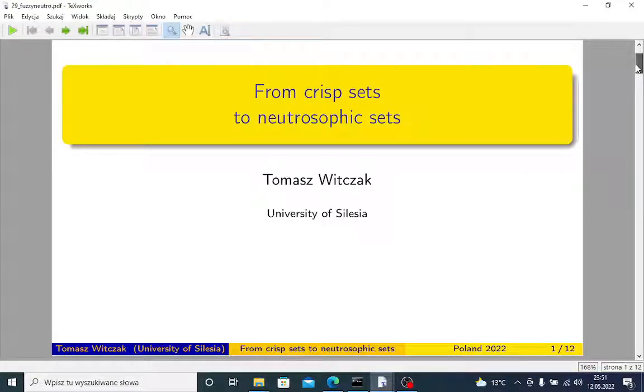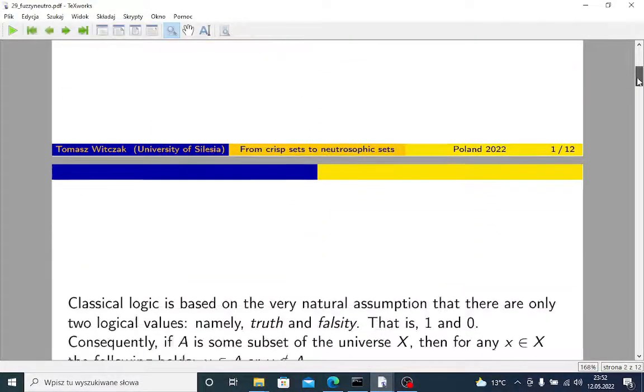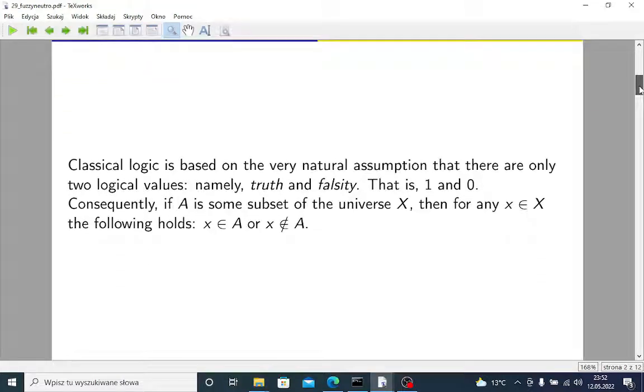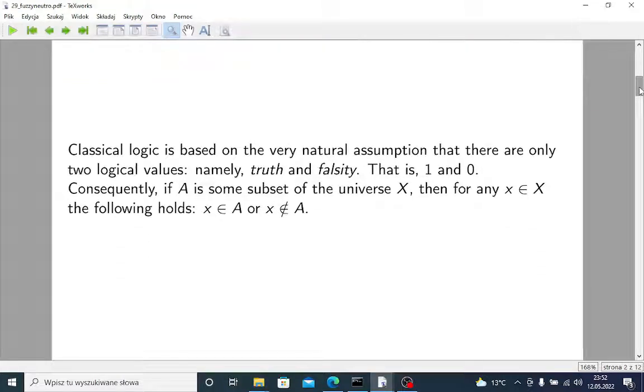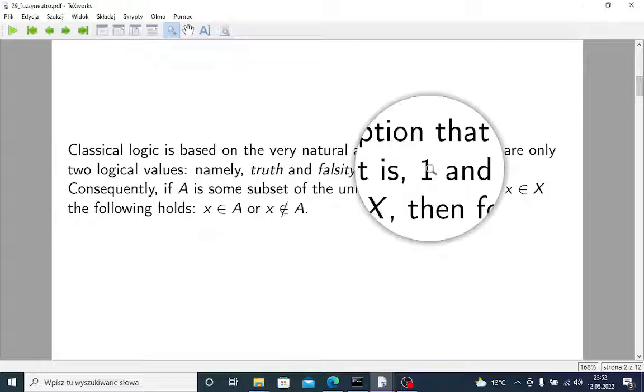From crisp sets to fuzzy intuitionistic fuzzy and neutrosophic sets. As we know, classical logic is based on the very natural assumption that there are only two logical values, namely truth and falsity, that is 1 and 0.